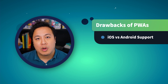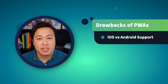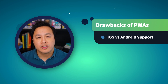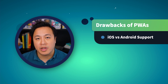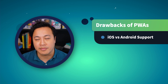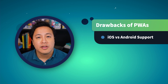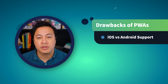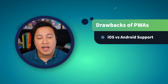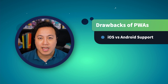In addition, while PWAs lag behind native apps in terms of the features mentioned, another drawback is browser compatibility. Features supported on platforms such as Android — due to using browsers like Chrome — are not yet supported on iOS, as those are being implemented on Safari on a different timetable.